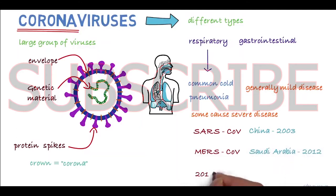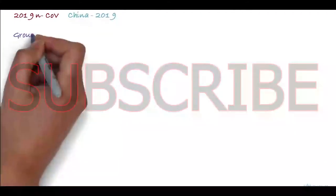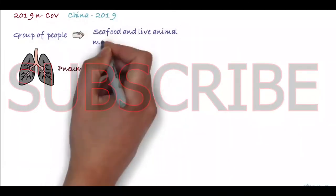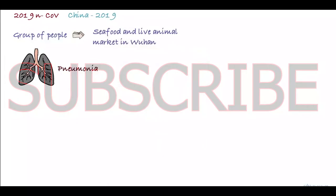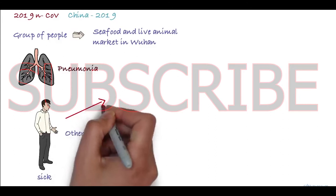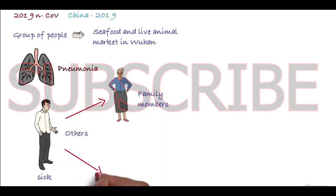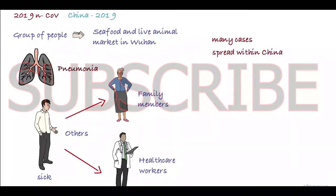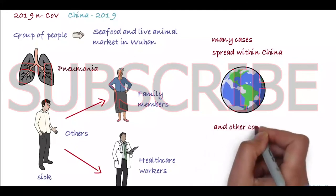The 2019 novel coronavirus was first identified in China. It initially occurred in a group of people with pneumonia who'd been associated with a seafood and live animal market in the city of Wuhan. The disease has since spread from those who were sick to others including family members and healthcare staff. There are many cases at present and the disease has spread within China and also to a number of other countries.